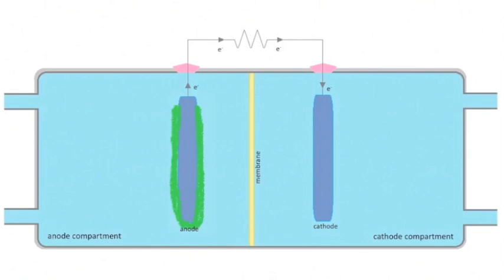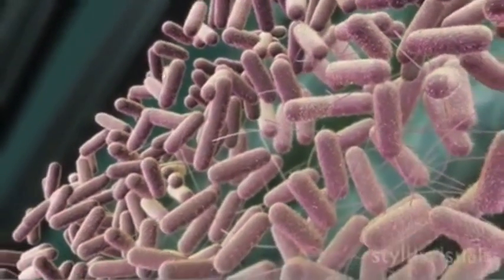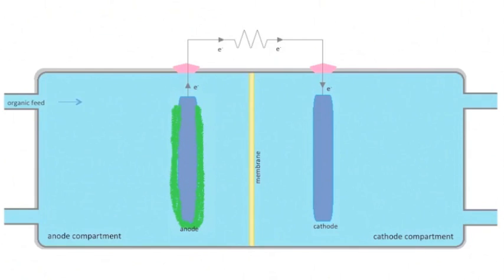A biofilm grows on the anode. An organic feed stream such as wastewater enters the fuel cell where it is oxidized by the biofilm. Simultaneously, oxidized products leave the fuel cell.